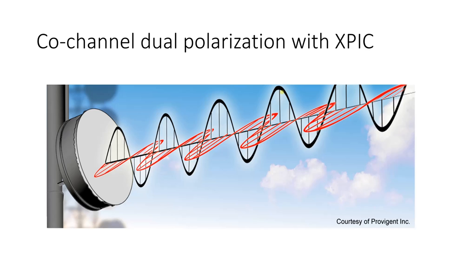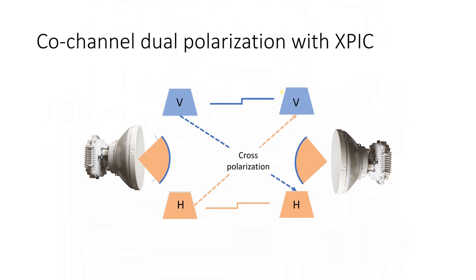Let us start with the first technique: Co-Channel Dual Polarization with XPIC. This is a somewhat older technology where, on a single frequency F1, we use both orthogonal polarizations — vertical and horizontal. F1 transmits in both polarizations, effectively doubling the capacity of the microwave link. However, some energy from one polarization transfers to the other — predominantly, energy transfers from horizontal to vertical polarization.